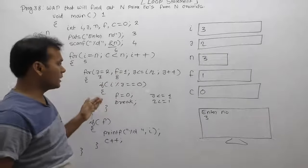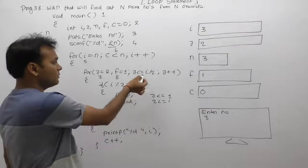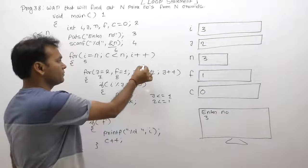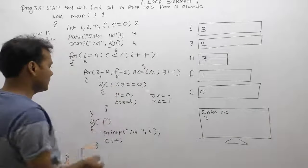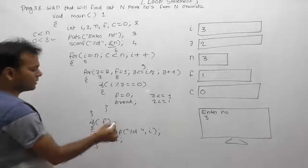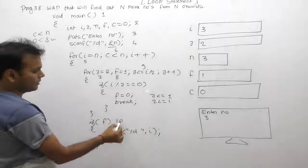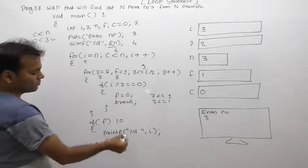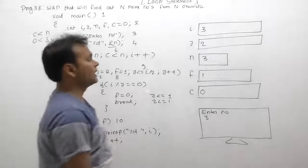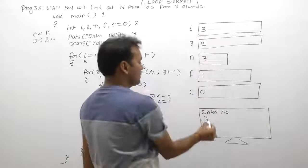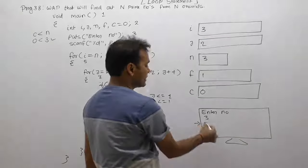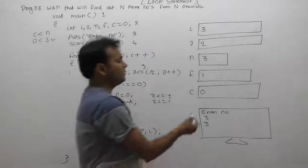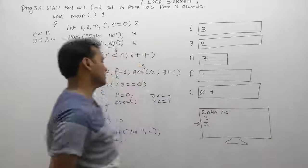Since the inner loop condition was false, control goes directly outside to the if statement checking F. F's value is 1 (still the initial value), so condition is true. We display the value of I, which is 3. So the output gets 3 printed. Then C++ is executed — C's value increases to 1. This completes the first iteration.